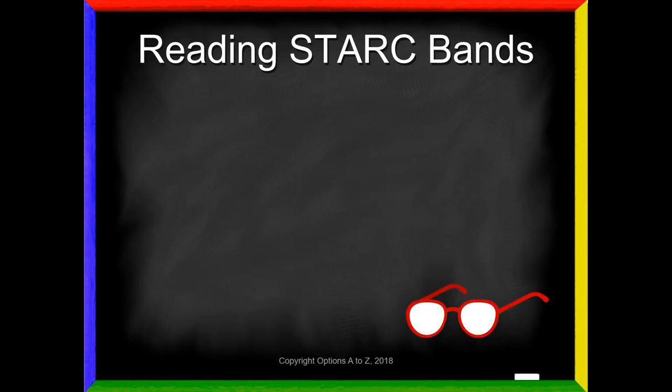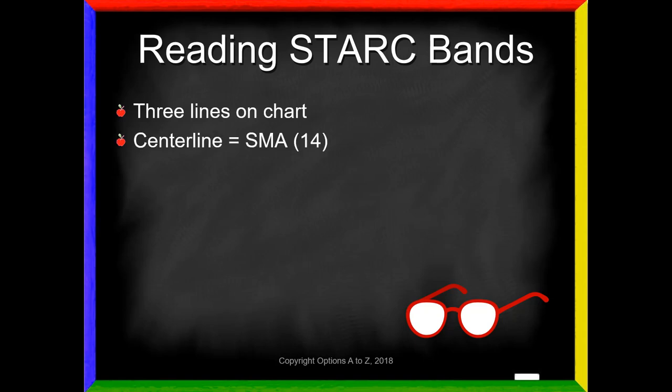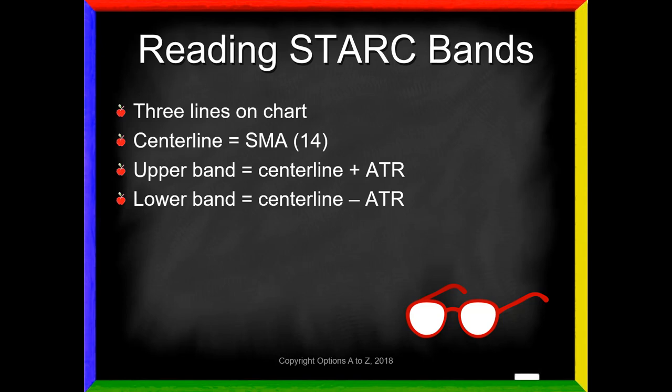We're going to use the same idea for reading STARC Bands. You're going to get three lines on your chart, very much like Bollinger Bands. You're going to get a center line that is the simple moving average of your stock prices — most of the time we're going to use probably a 14-day moving average, though we could make that number anything we wanted. From there, we create an upper band, which is simply the center line — the simple moving average — plus the average true range. We also calculate a lower band, which is the center line minus the average true range. So we're combining a simple moving average, but instead of plus and minus two standard deviations like Bollinger Bands, we use plus and minus the average true range borrowed from Wilder.